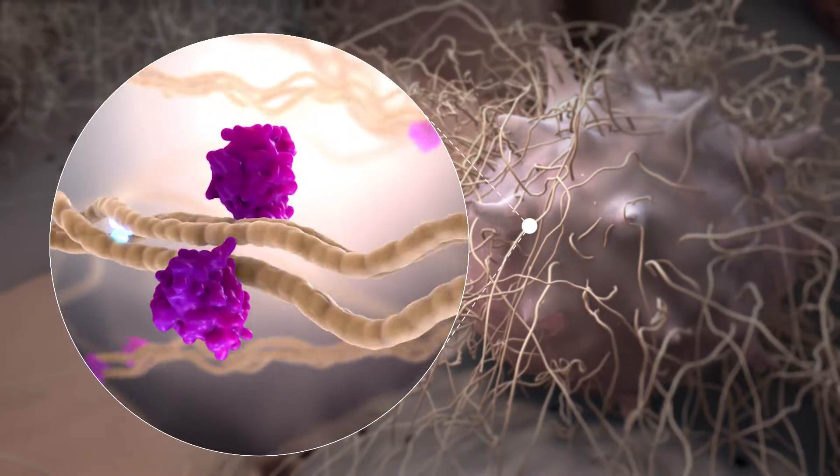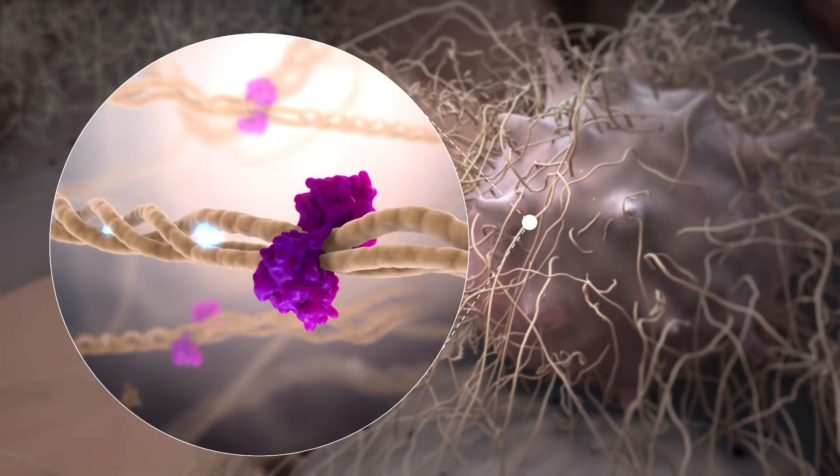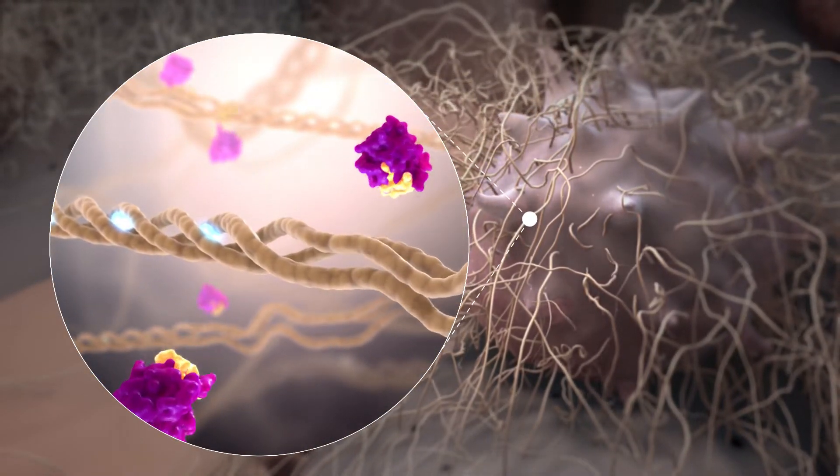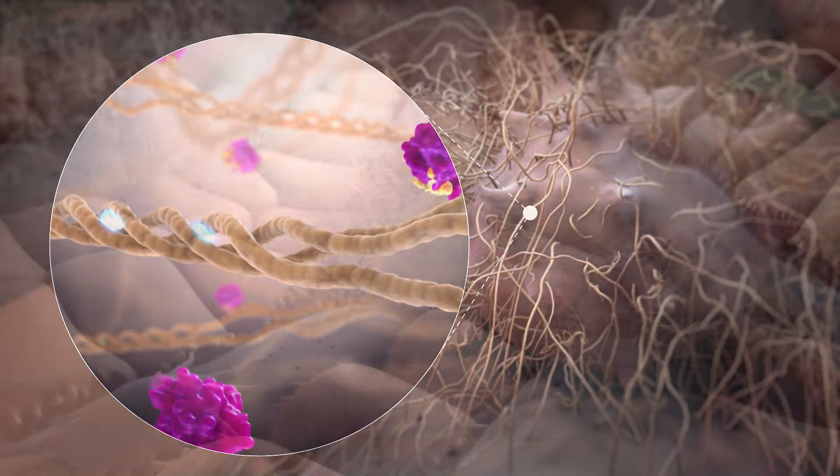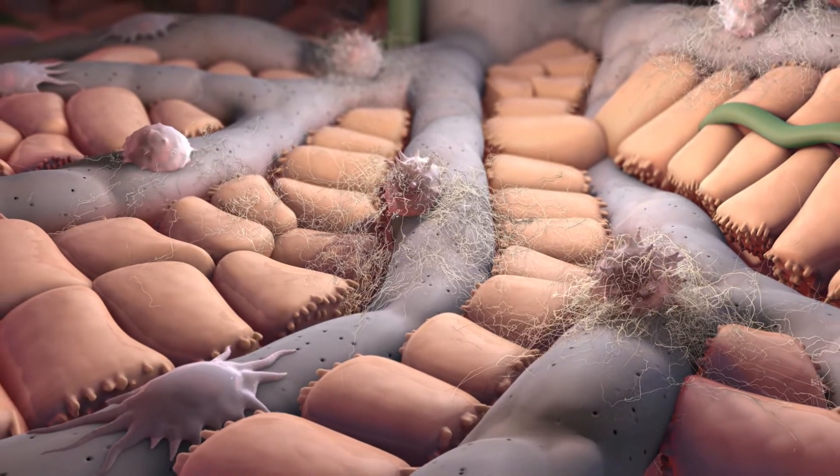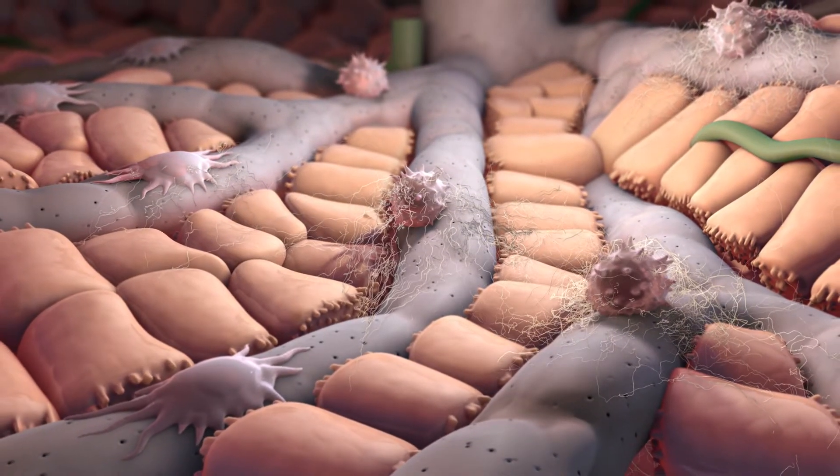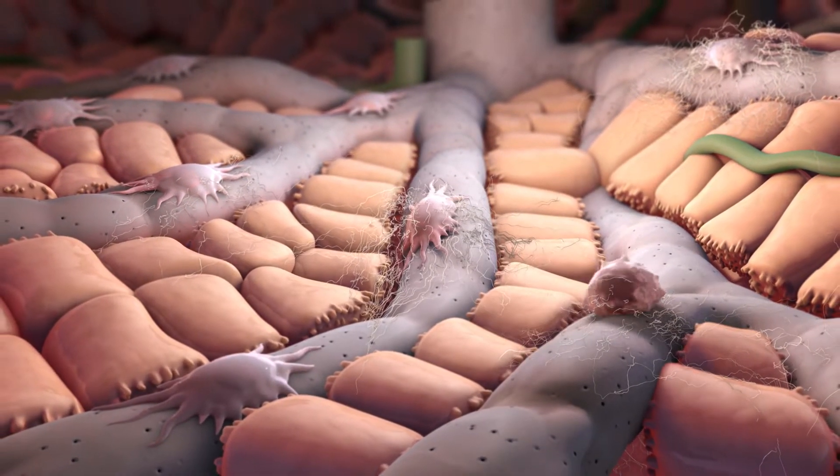Thirdly, CRV431 blocks the actions of cyclophilin B, an important regulator of collagen production in stellate cells. This leads to reduction in collagen secretion and fibrotic scarring which is a primary goal in the treatment of NASH.